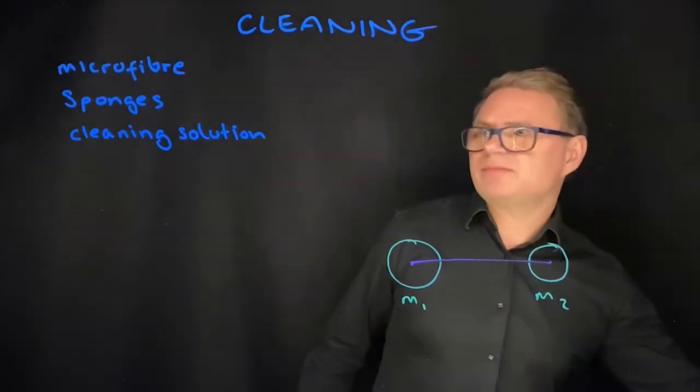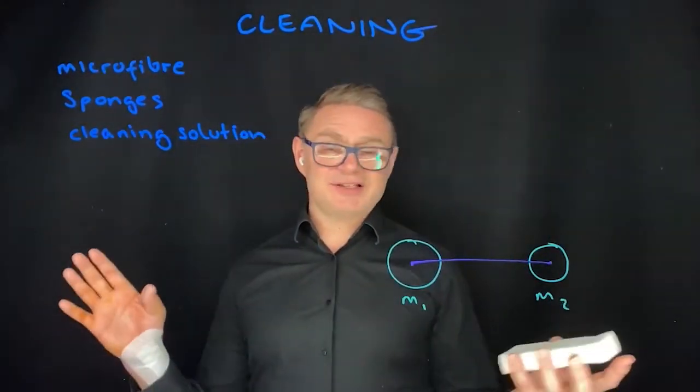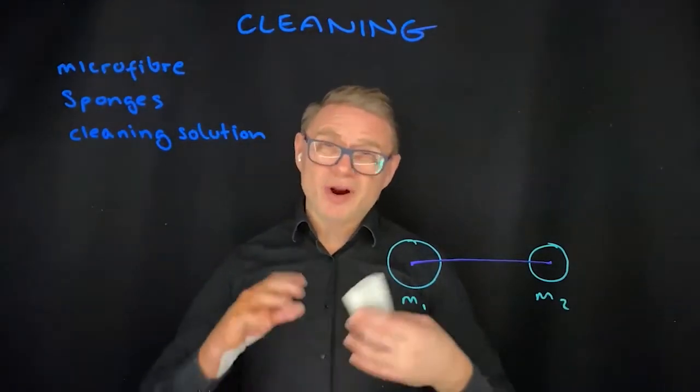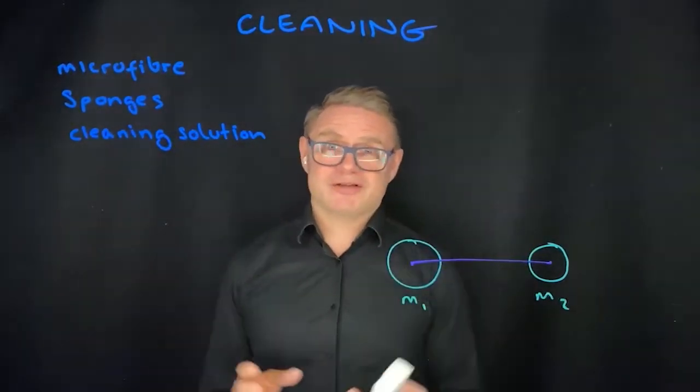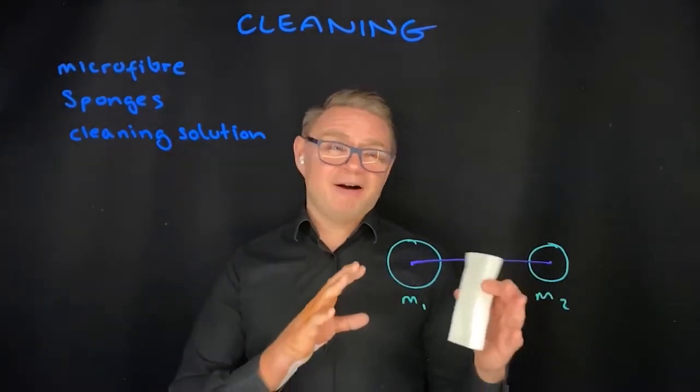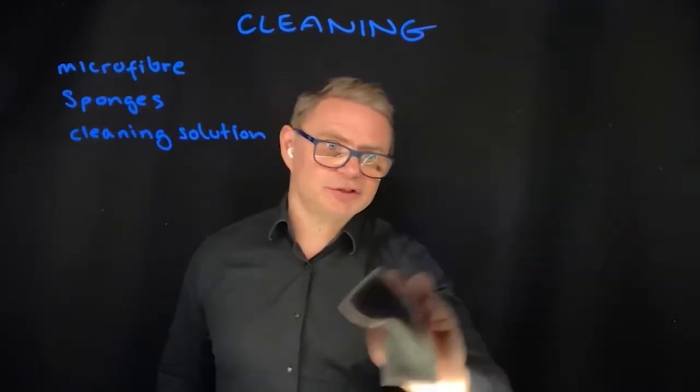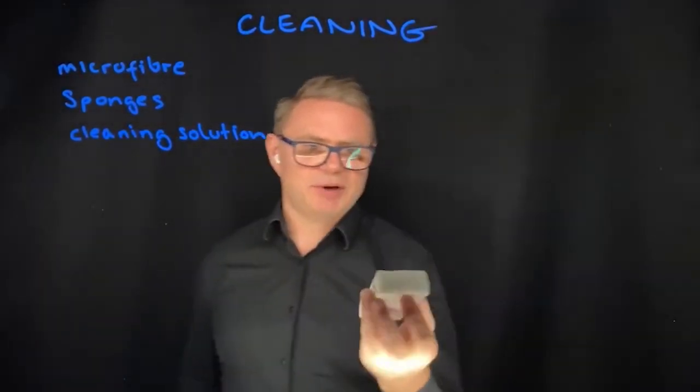So I mentioned the sponges. These are what we call our magic sponges, and I tend to use these quite a bit. Typically what I will do is I will do a bunch of sessions with the light glass every day, and then at the end of the day I will clean it with the cleaning solution, which I'll show you in a second.